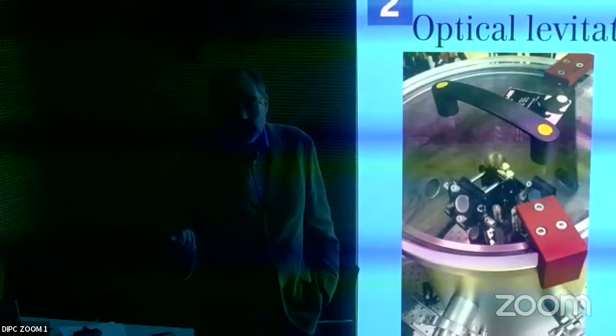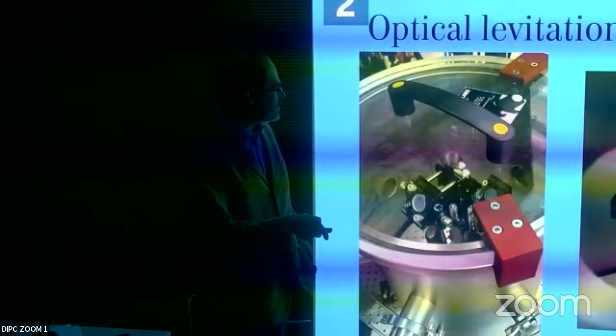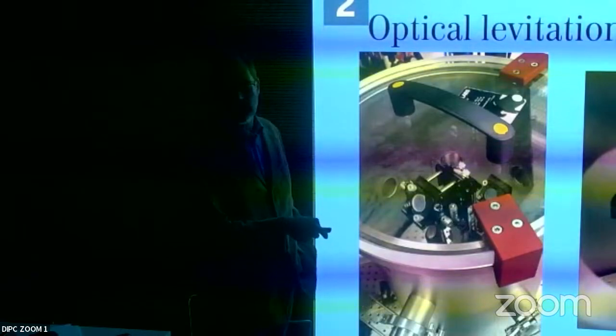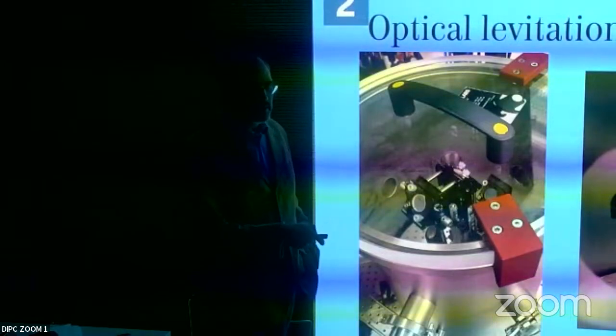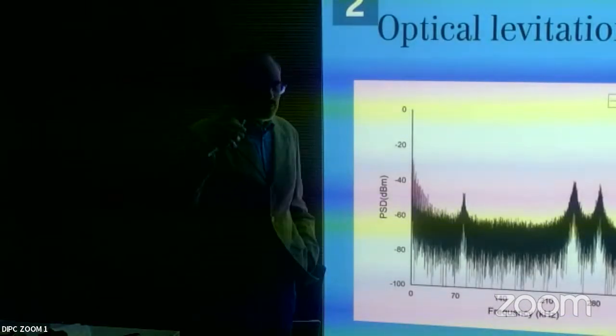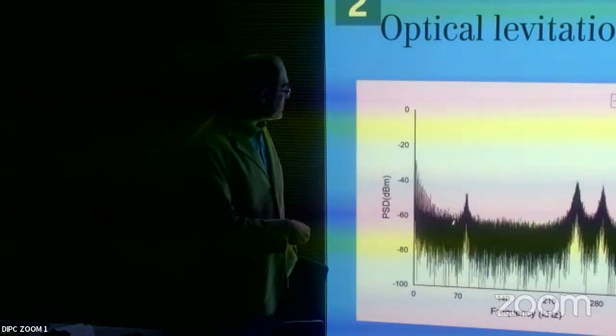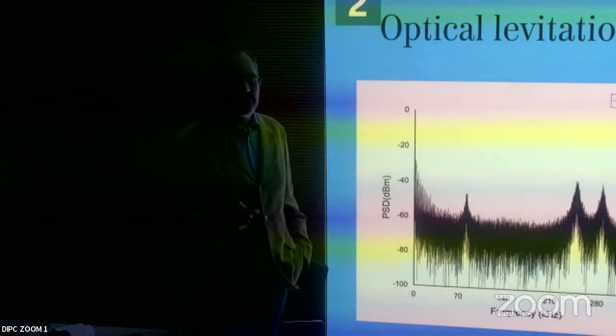Here is our vacuum chamber setup. Through one of the windows, you can see a single particle floating in the air just above the microscope objective — a single dust particle captured by light and held there for many hours. When we decrease the chamber pressure, the corner frequency in the Fourier spectrum splits into three sharp resonance peaks, corresponding to oscillations in x, y, and z — because the particle is no longer damped.